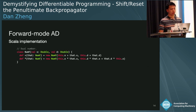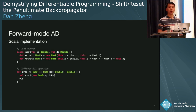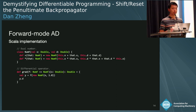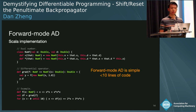Forward mode AD is a well-explored technique implemented in many languages. Here's what it looks like in Scala, which I'll be using for this talk. We have a dual number type representing a pair of a value and its derivative. We overload math operations so they compute both the original value and derivative simultaneously. We also have a differential operator that takes a function over these numbers and an initial argument x — we apply f to x with the initial derivative value of 1, then return the derivative with respect to the output. Forward mode AD can be implemented in just a few lines of code.